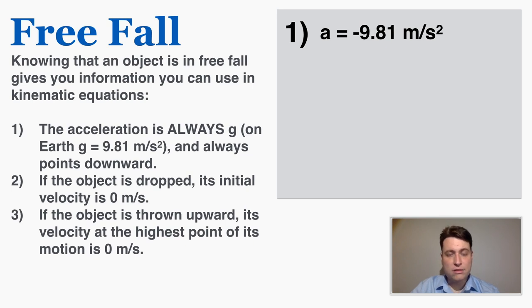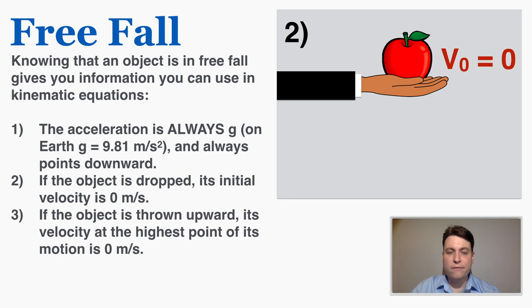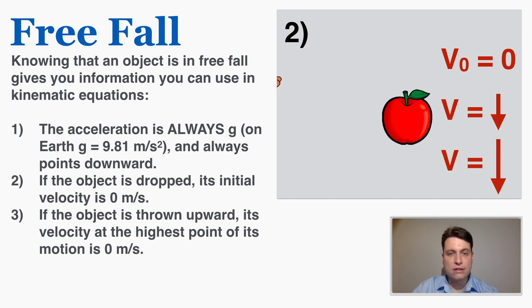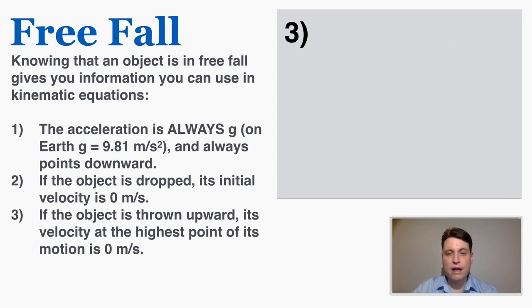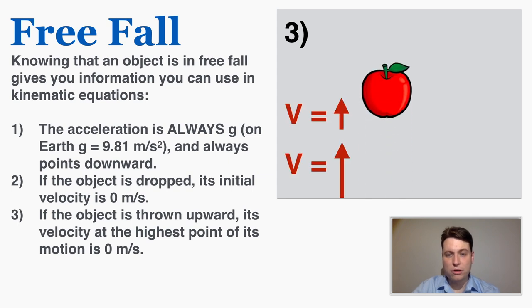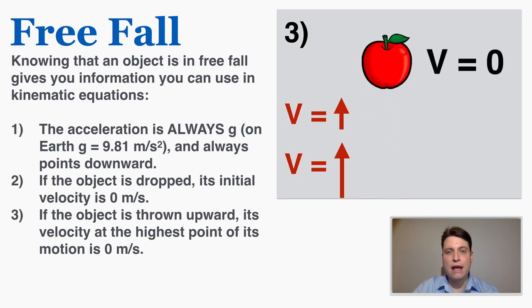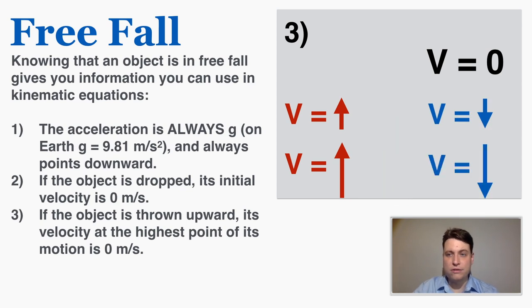Second, in some freefall problems it may say the object is dropped — that's physics code meaning its initial velocity is zero meters per second, because if you drop an object you're not giving it any velocity to start. The acceleration of gravity then speeds it up from rest. Third, if the object is thrown upwards, its velocity at the very highest point of its motion is zero, because it crosses from a positive to a negative velocity and must pass through zero.